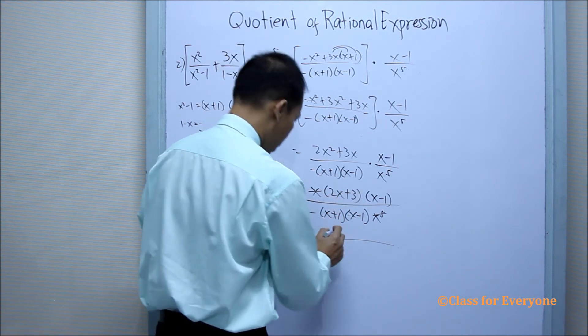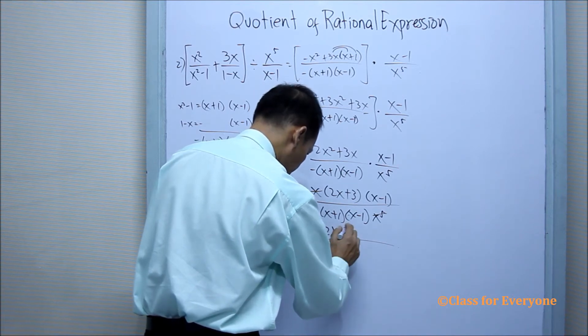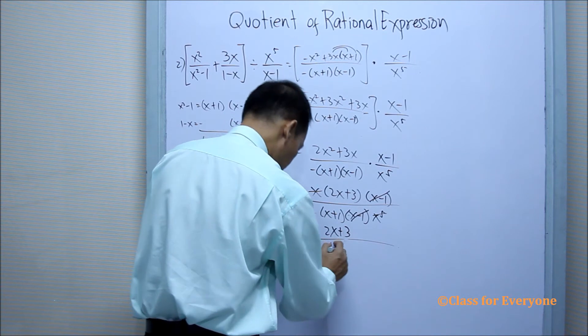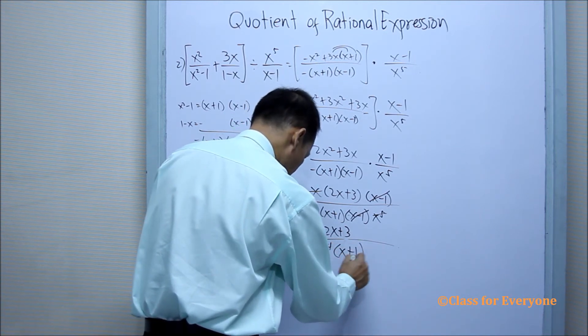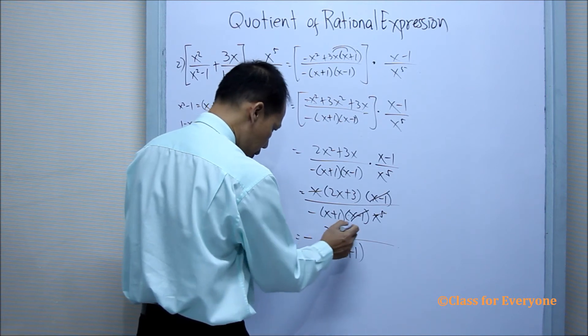2x plus 3. So we have a numerator of 2x plus 3, x minus 1, and then the denominator has x plus 1. But there is a negative, so we'll just write it into the middle.